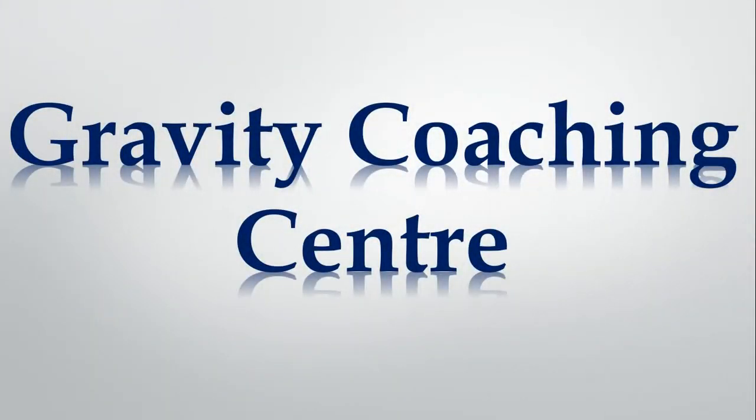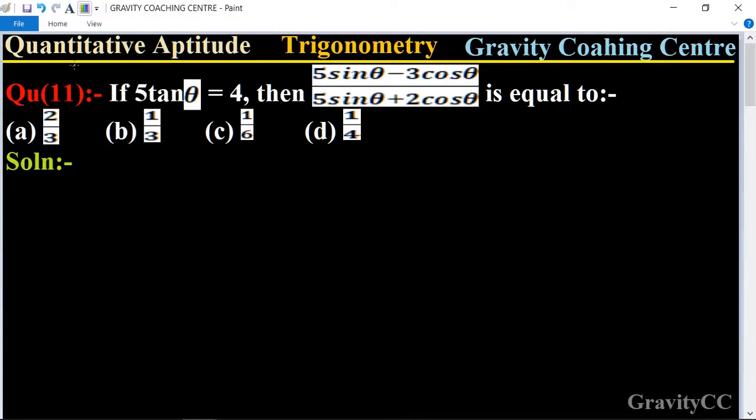Welcome to our channel Gravity Coaching Center. Quantitative Aptitude, Chapter Trigonometry, Question Number 11. If 5 tan θ is equal to 4, then (5 sin θ - 3 cos θ) / (5 sin θ + 2 cos θ) is equal to what?